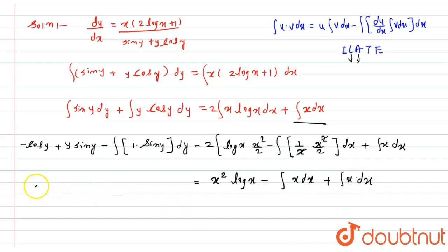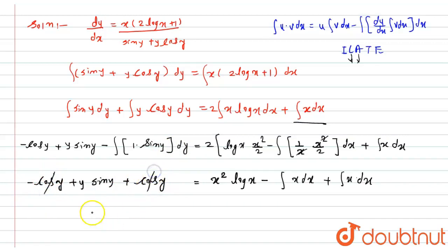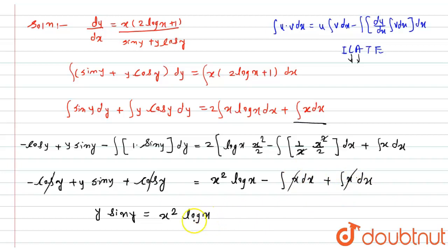On the left side we have minus cos(y) plus y·sin(y) minus integration of sin(y) which is minus cos(y), so the two cos(y) terms cancel. The minus integration of x dx and plus integration of x dx on the right also cancel. We get y·sin(y) equals x²·log(x) plus constant C.